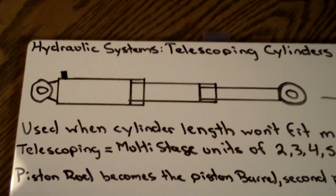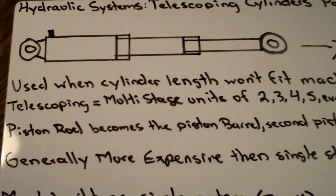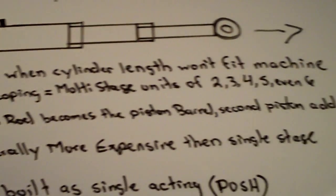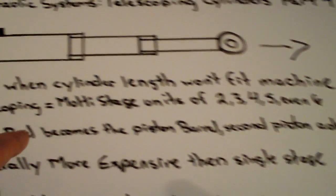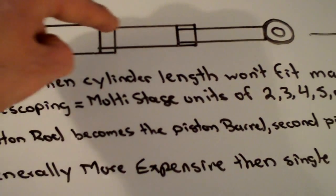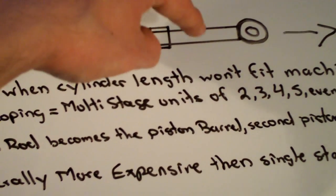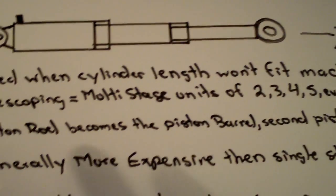In a telescoping cylinder, the piston rod is used as the piston rod and the piston barrel, and then a 2nd, 3rd, 4th, or even 5th and 6th piston is added. So as you can see here, this is your barrel, and then you've got your piston rod here, and the piston rod also becomes the barrel of the next and so on in the series, depending on how many you have.